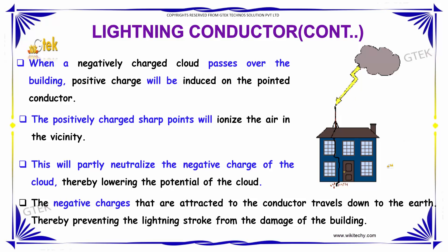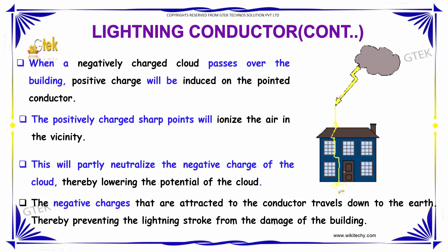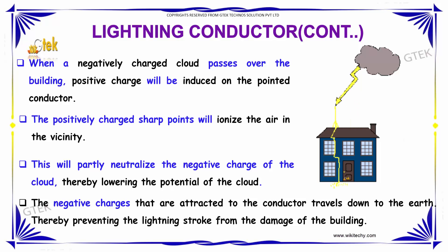The negative charges attracted to the conductor travel down to the earth, thereby preventing the lightning stroke from damaging the building. This is how the lightning conductor has its protective impact on the building.